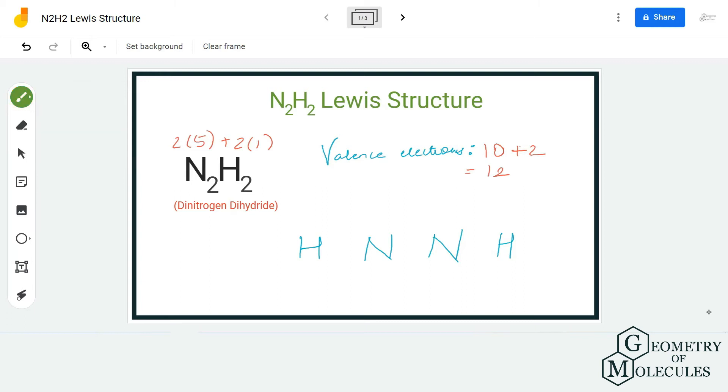Here we are placing a pair of electrons between both these nitrogen and hydrogen atoms. Doing that, we will have a stable structure for hydrogen atom because if you recall it just needs two valence electrons in its outer shell to attain a stable structure. So now hydrogen atoms are stable over here.